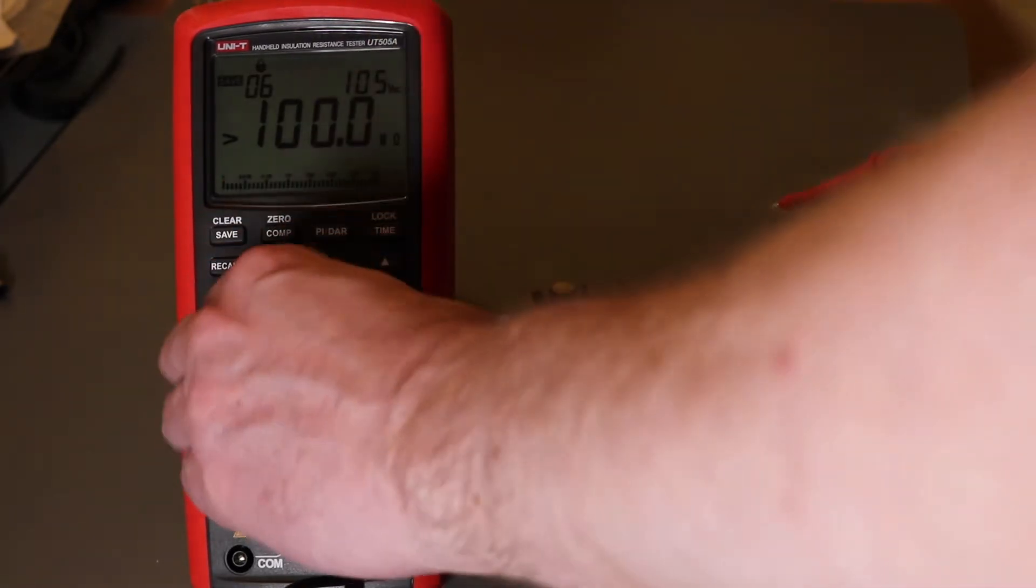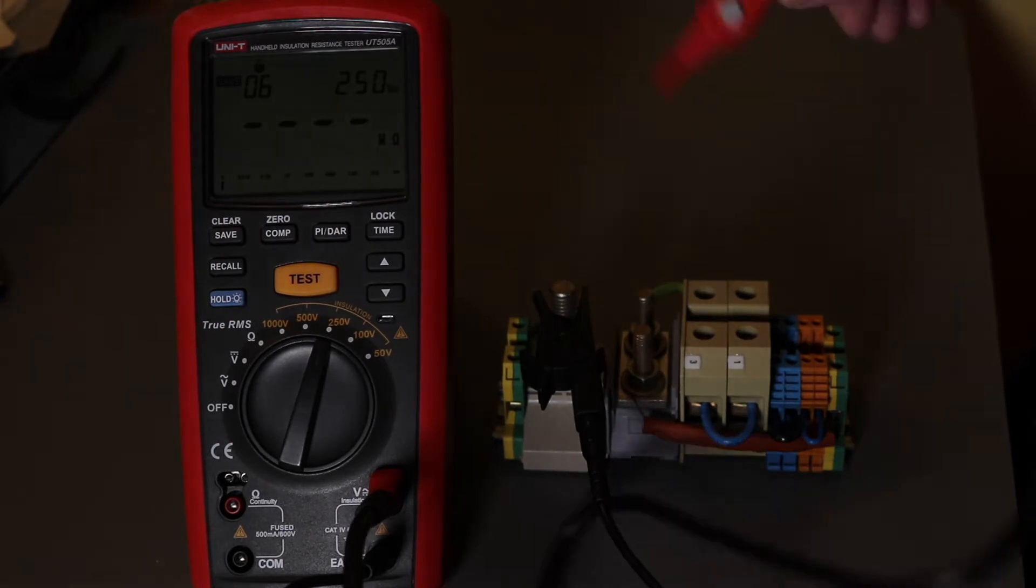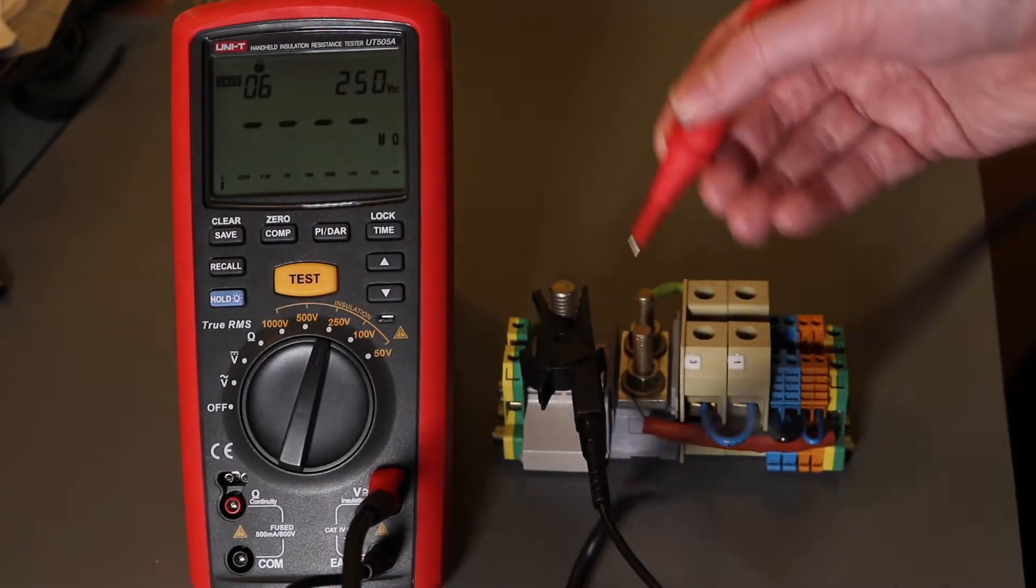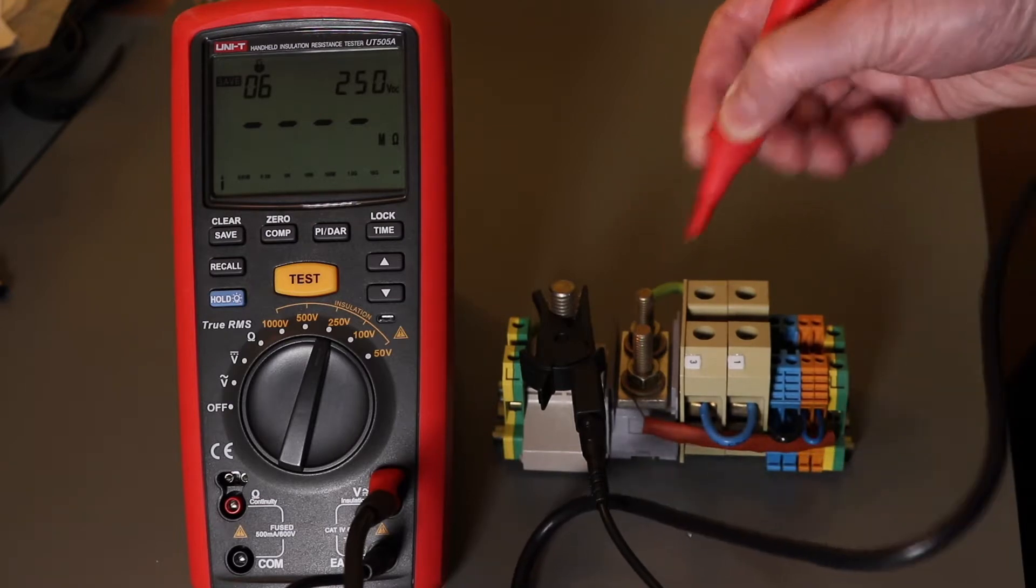So any resistance below that will actually produce an alarm on the tester, continuous, and you can't change that. It just keeps going.